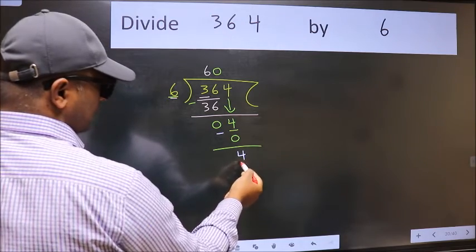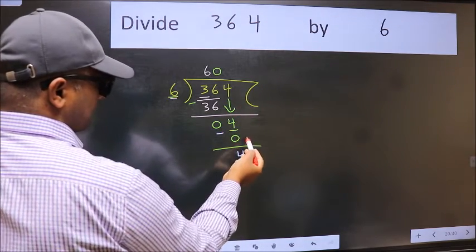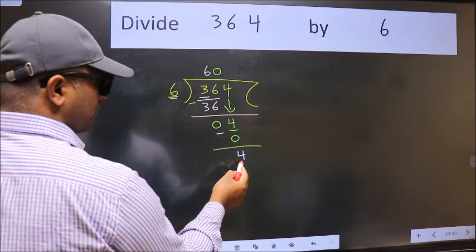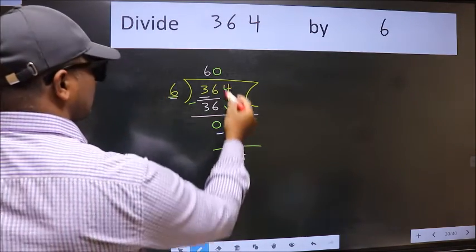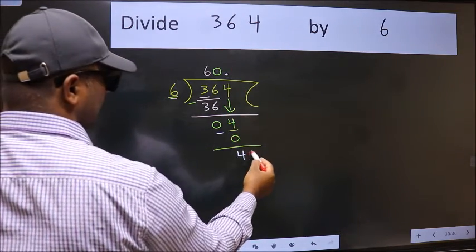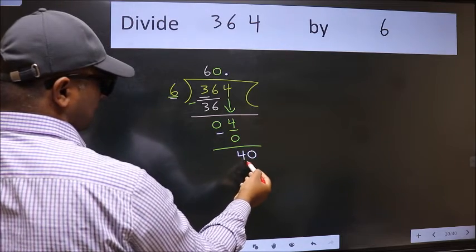Over here, we did not bring any number down, and 4 is smaller than 6. So now we can put a dot and take 0, making it 40.